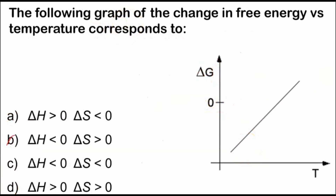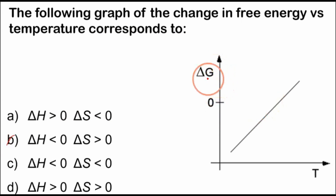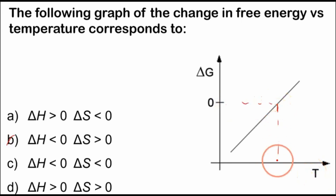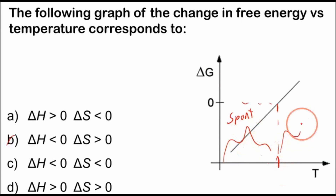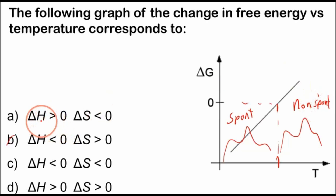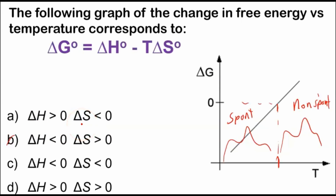Next exam problem. The following graph of the change in free energy versus temperature corresponds to what situation? We have a y-axis of ΔG and an x-axis of temperature. There's a point where below a certain temperature the change in Gibbs energy is negative — so the reaction is spontaneous in that region — and above that temperature it is non-spontaneous.